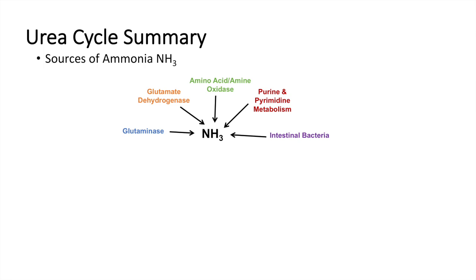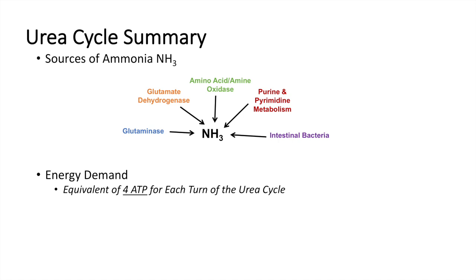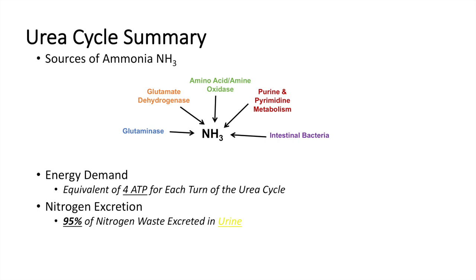To summarize energy usage, the urea cycle utilizes an equivalent of 4 ATP for each turn: 2 ATP at the CPS1 reaction and an equivalent of 2 ATP at the argininosuccinate synthetase reaction. As for nitrogen excretion, 95% of nitrogen waste is excreted in the urine and 5% in feces. Of all this, 80–90% of nitrogen is lost as urea, making it the primary way the body excretes nitrogenous waste and demonstrating how critical this cycle is for homeostasis.